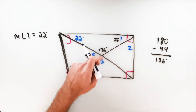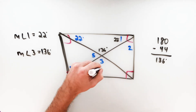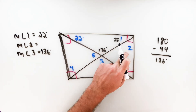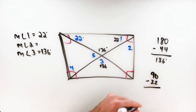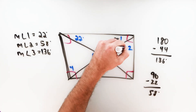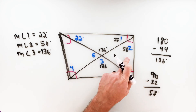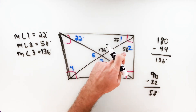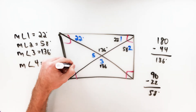Since 136 degrees and angle three are vertical angles, and vertical angles are always equal, angle three is also 136 degrees. For angle two, notice the corner of the rectangle is a 90-degree angle. Angle one is 22 degrees, and angle two and angle one are complementary — they add up to 90 degrees. So 90 minus 22 gives angle two as 58 degrees. Using alternate interior angles — since opposite sides of a parallelogram are parallel with a transversal — angle four and angle two are alternate interior angles, so angle four is also 58 degrees.